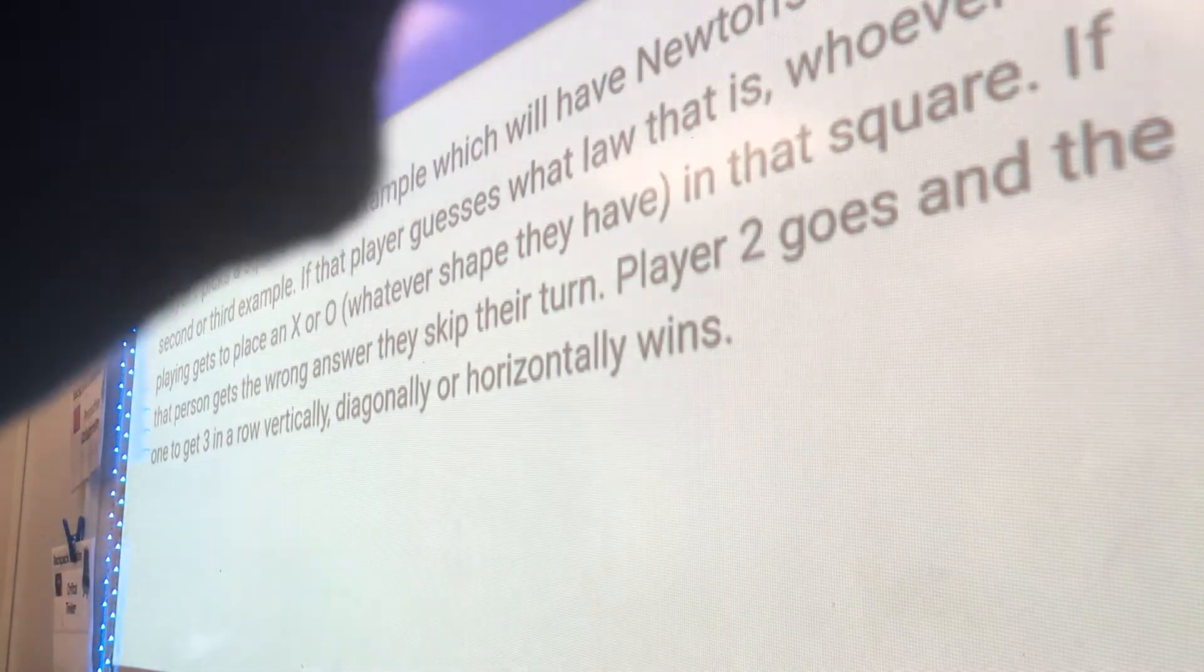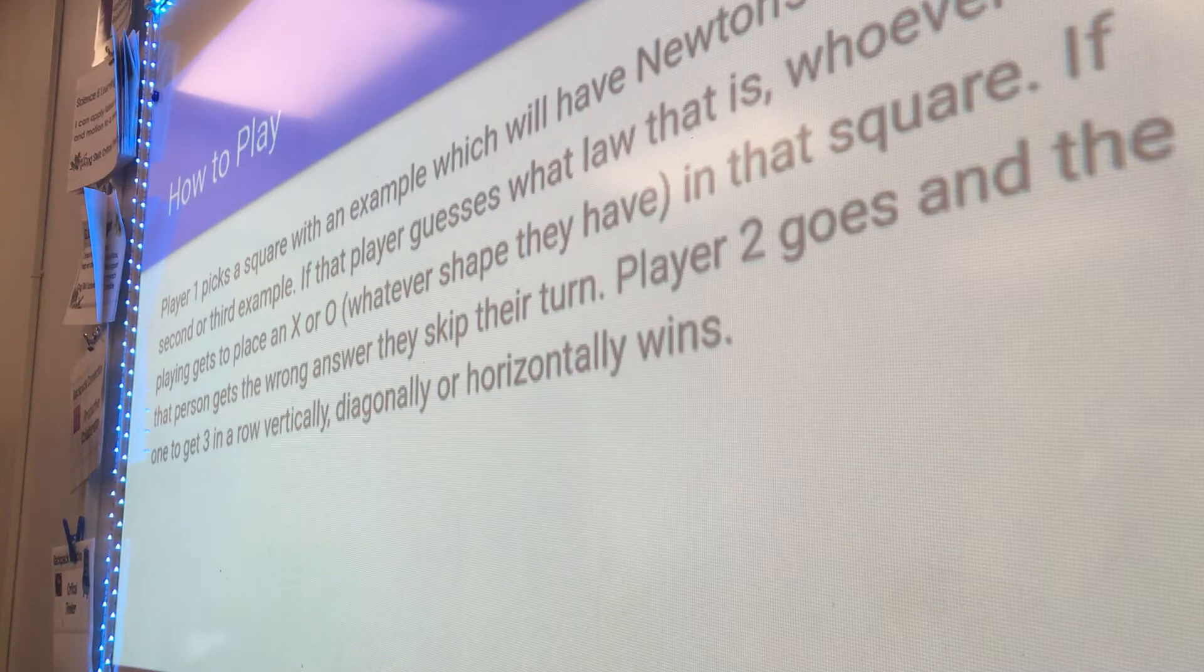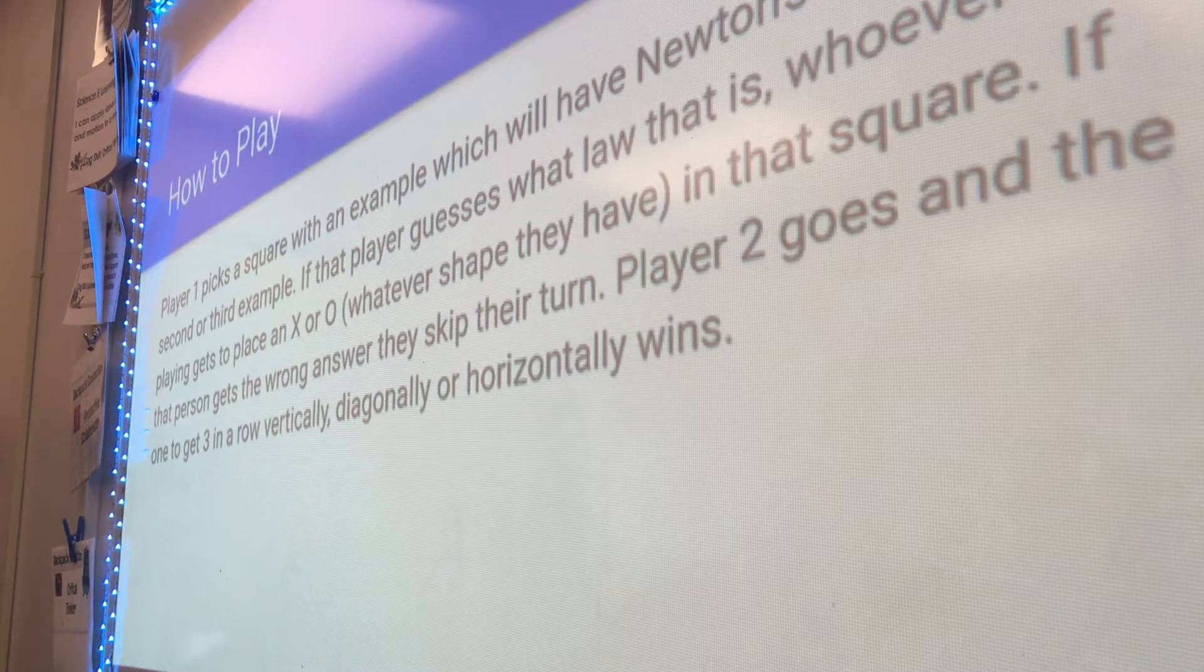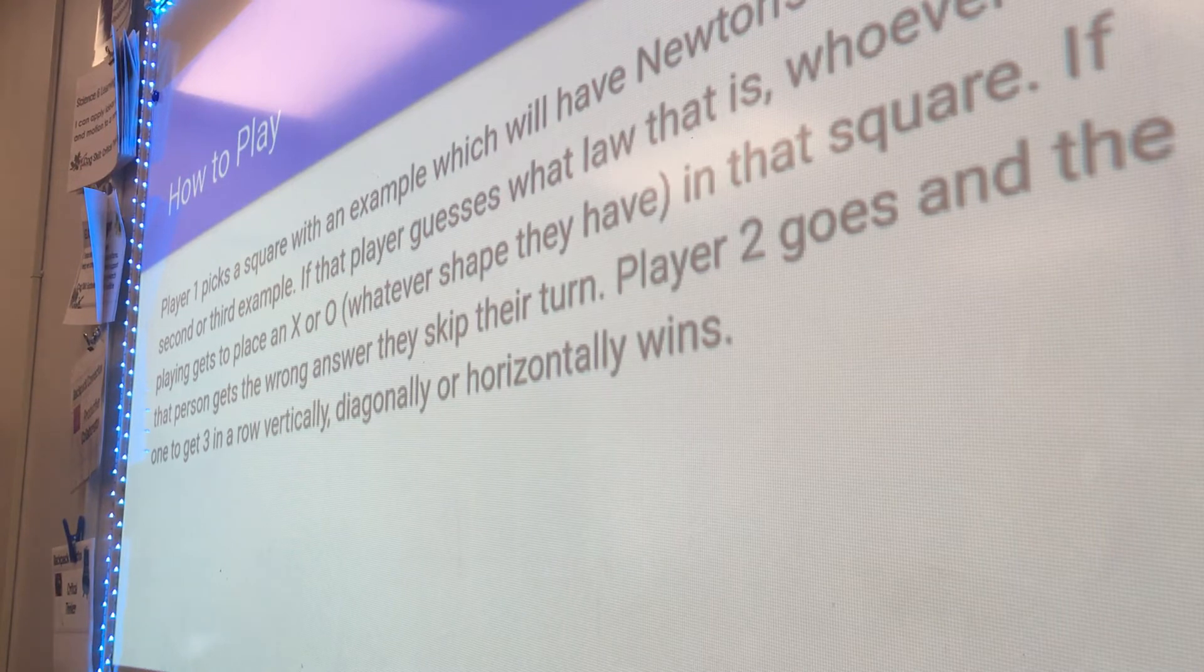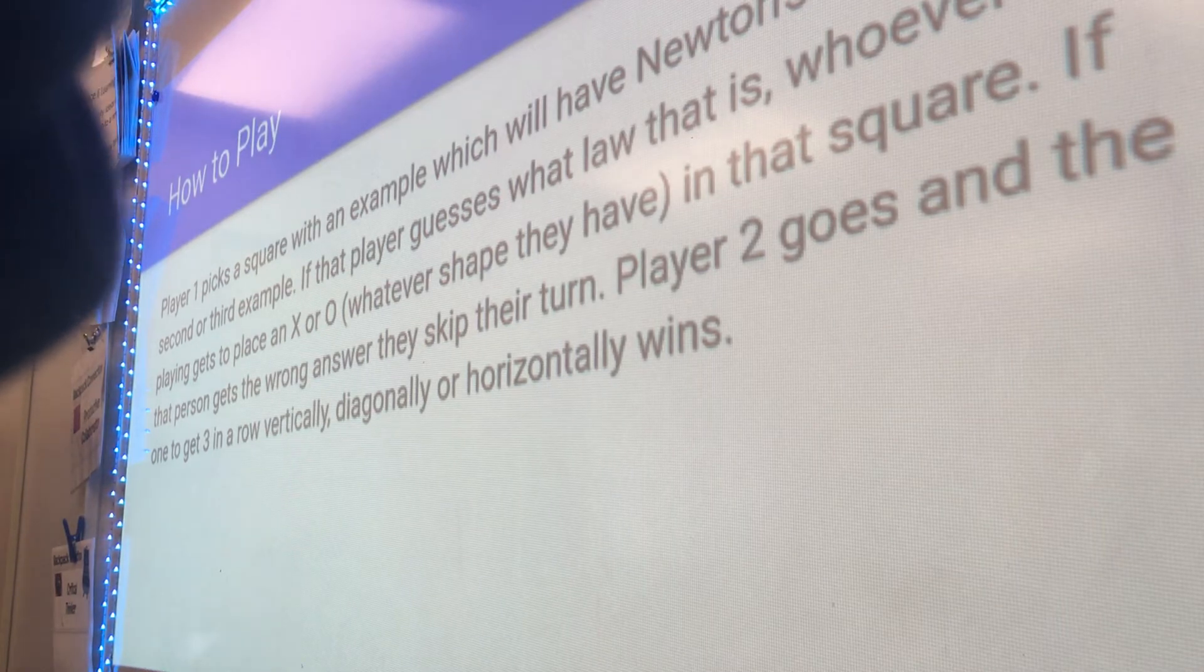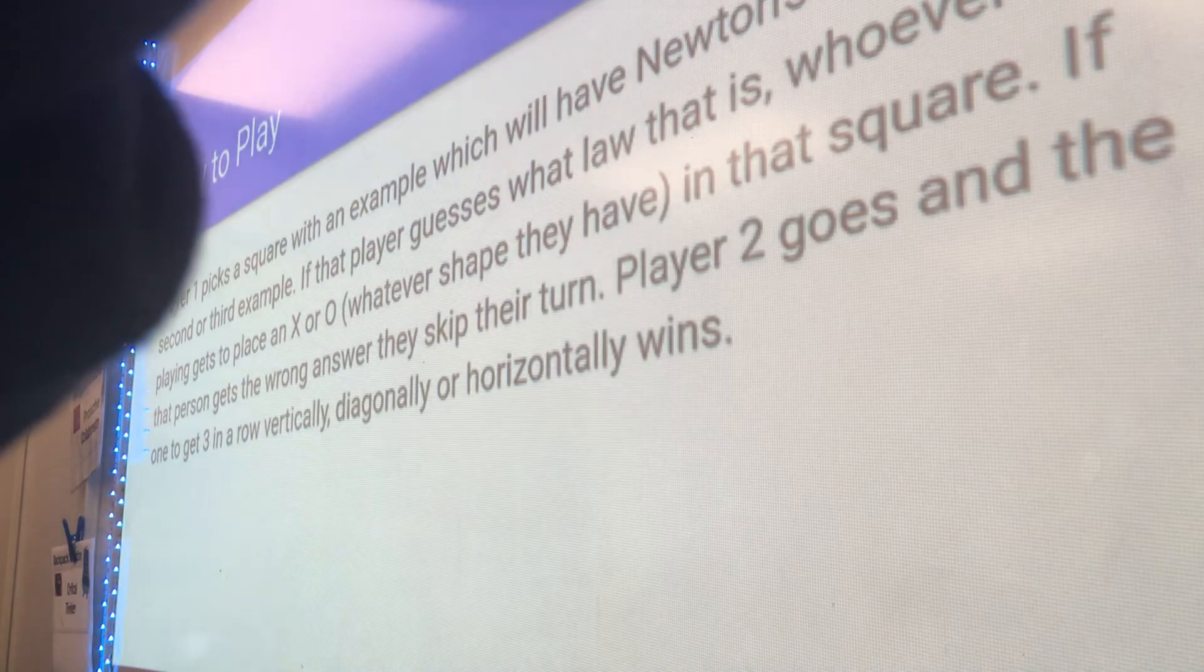Player one picks a square with an example that I have Newton's first, second, or third law example. If that player guesses what law that is, whoever is playing gets to place their shape in that square. If that person gets the wrong answer, they skip their turn, player two goes, and the one that gets three in a row vertically, diagonally, or horizontally wins.